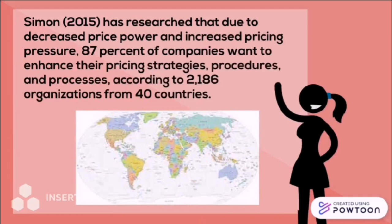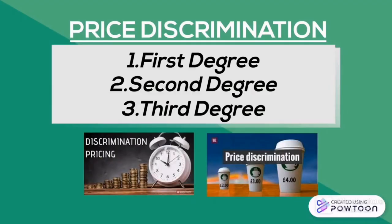According to 2,186 organizations from 40 countries, price discrimination is a marketing approach in which a vendor charges varying rates for the same product or service depending on what the consumer would agree to pay. In pure price discrimination, the vendor charges each consumer the maximum amount they will pay. Consumer willingness to pay and demand elasticity determine price differentiation. To succeed in price discrimination, a company requires market power such as a large market share, distinctive goods, and monopolistic pricing authority.